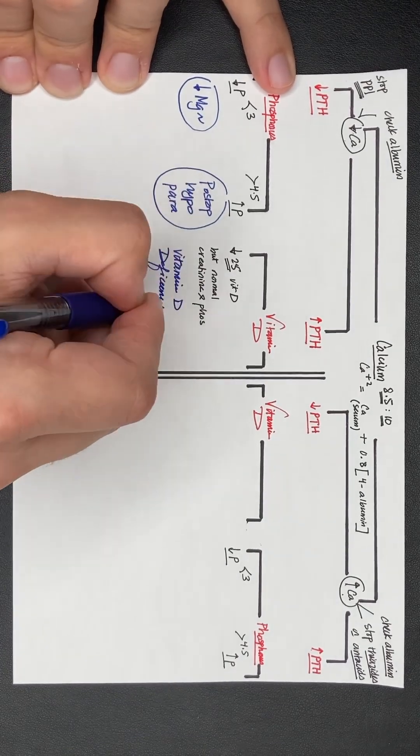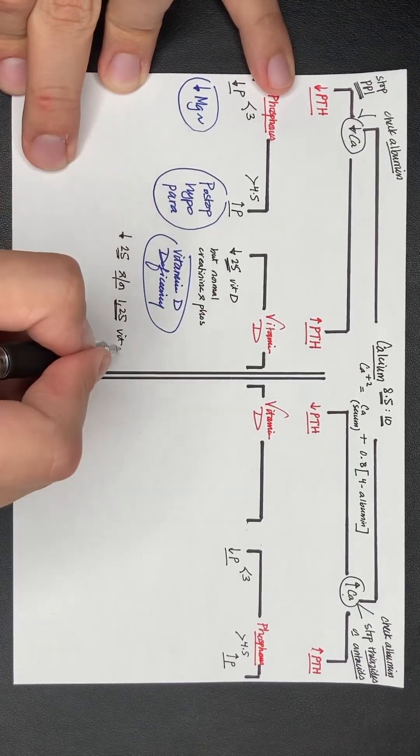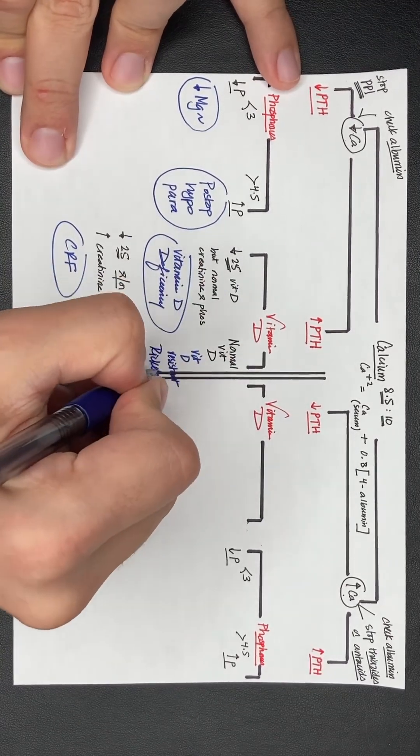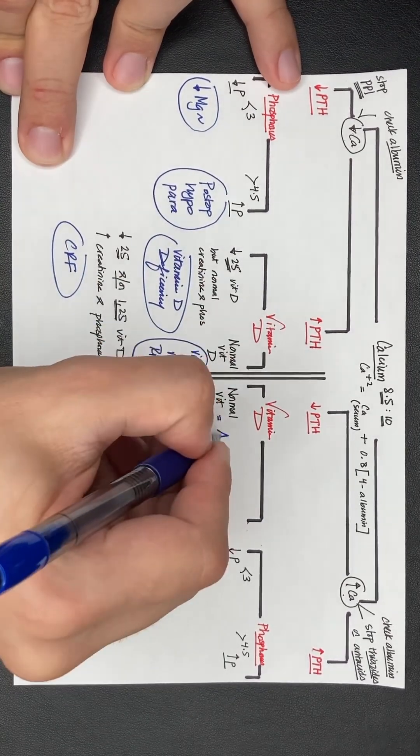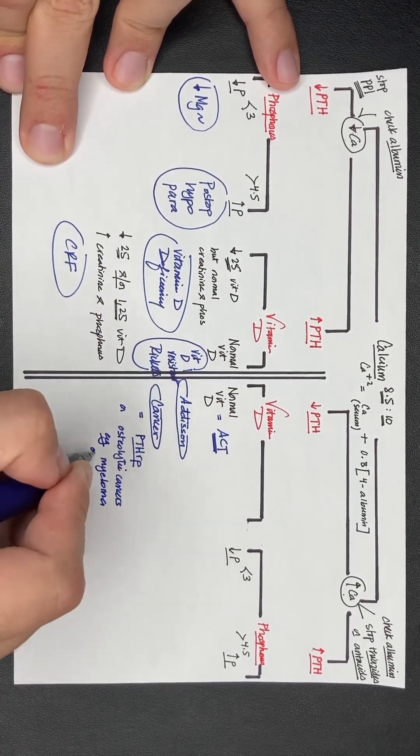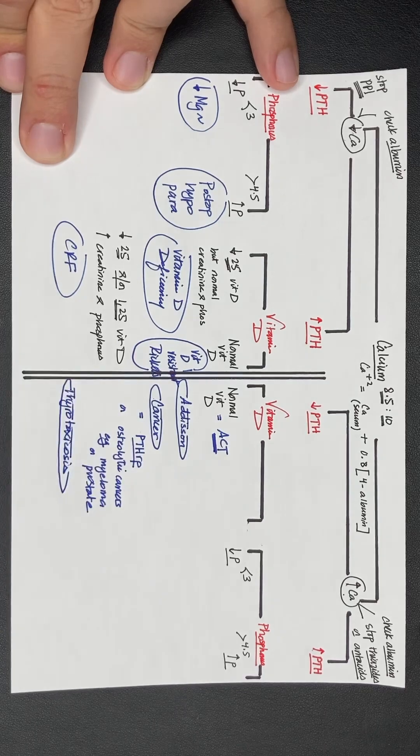Now, if the calcium and the parathormone are contradicting, you've got to check vitamin D because that will tell you if there is a deficiency versus a chronic renal failure or if there is a vitamin D toxicity versus the patient having sarcoidosis or paraneoplastic syndrome.